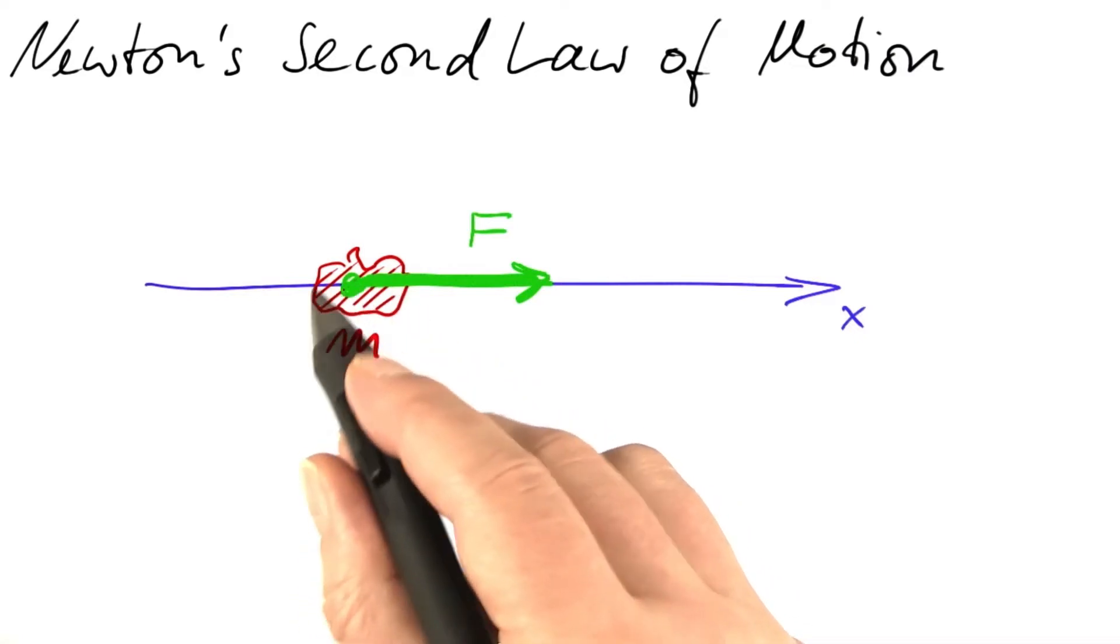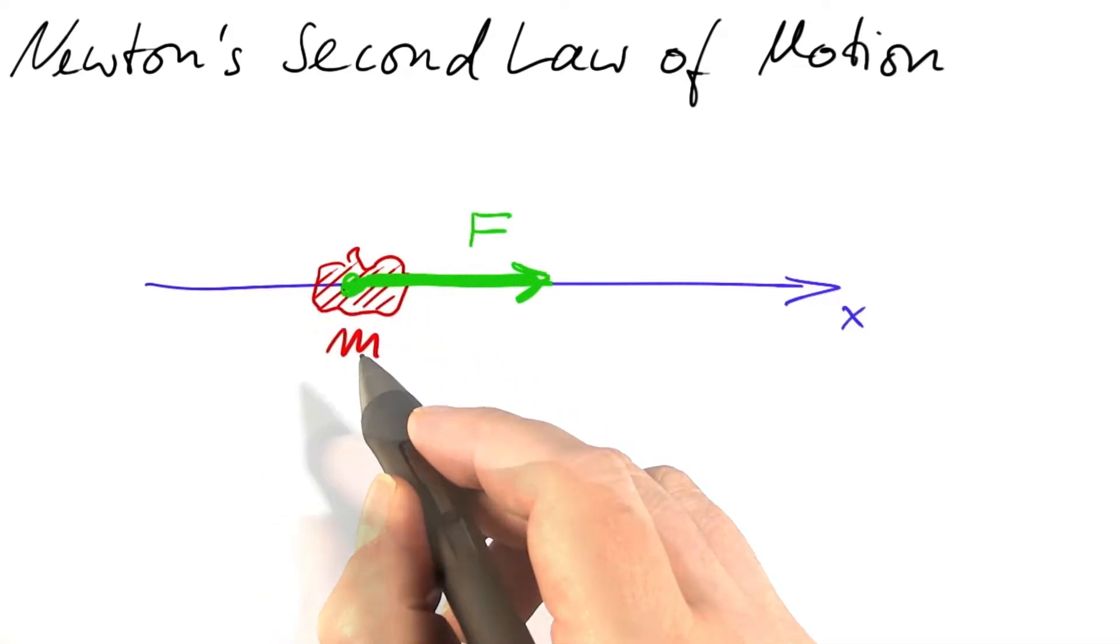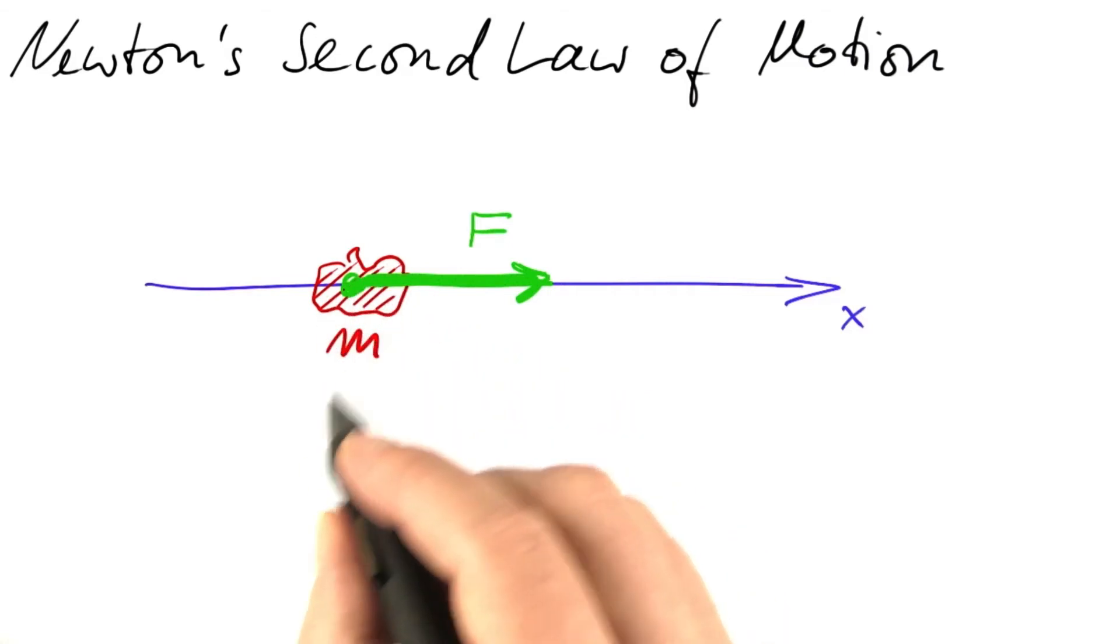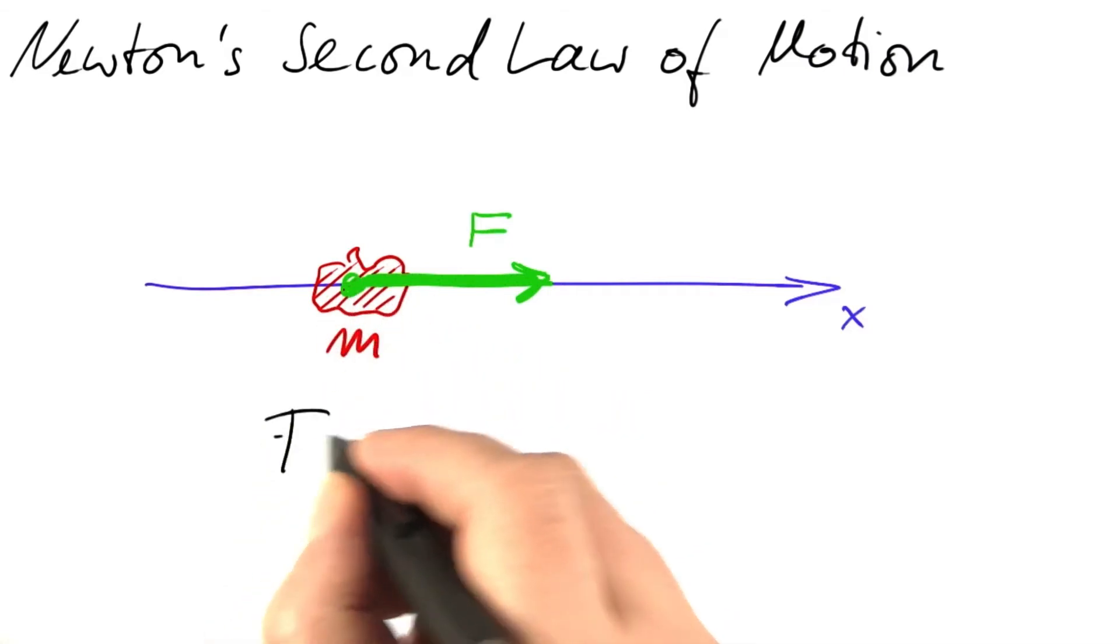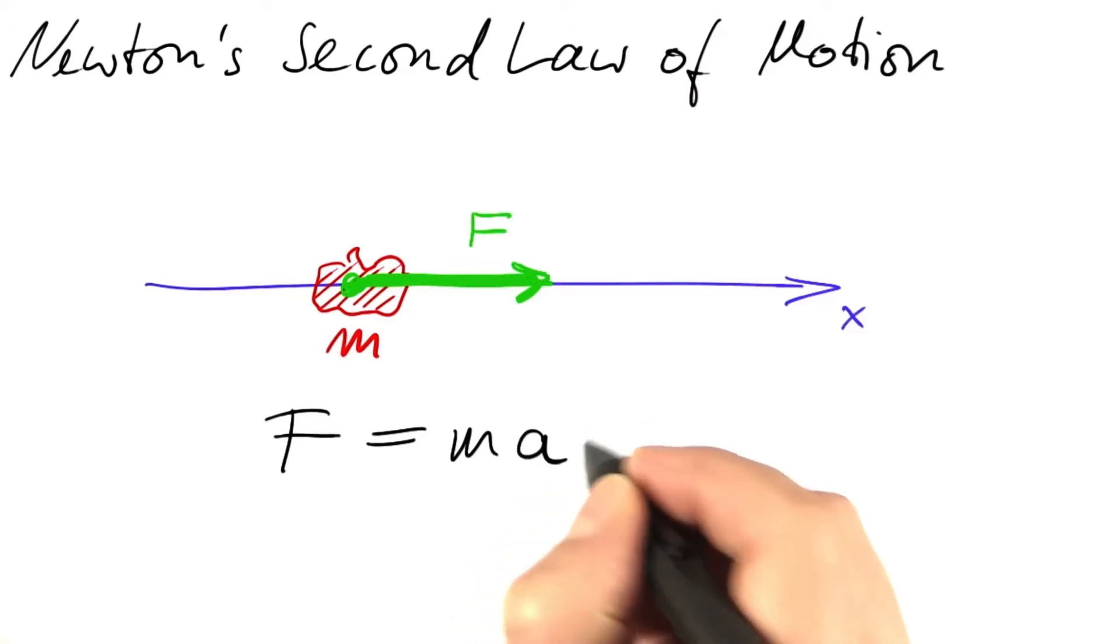Some force is exerted on an object of mass m. What happens? The velocity of this object changes, and Newton's second law describes that relationship.